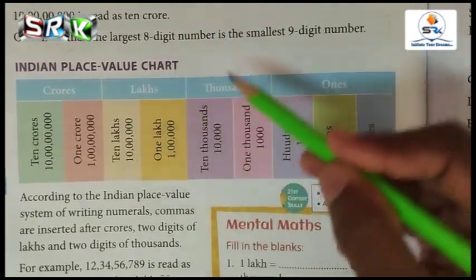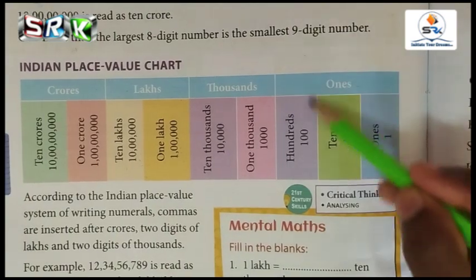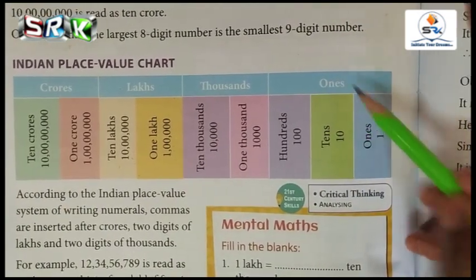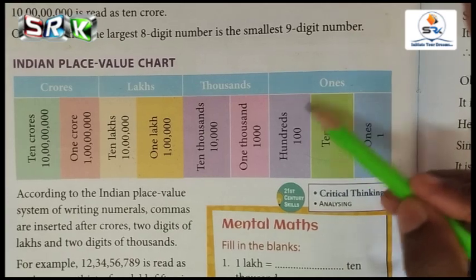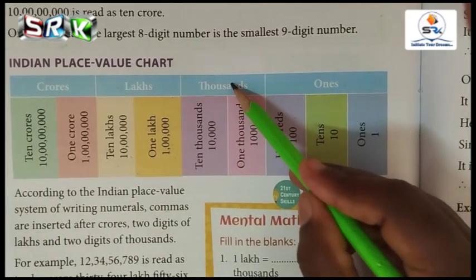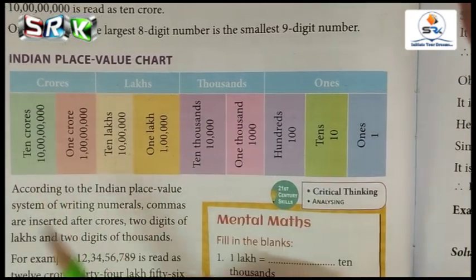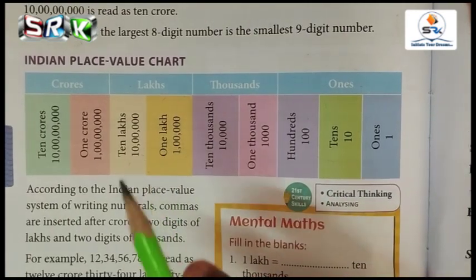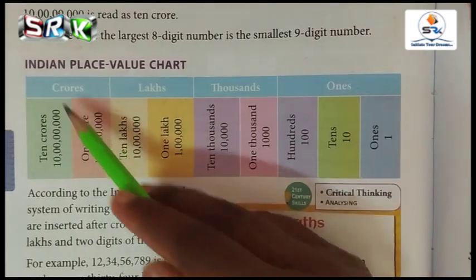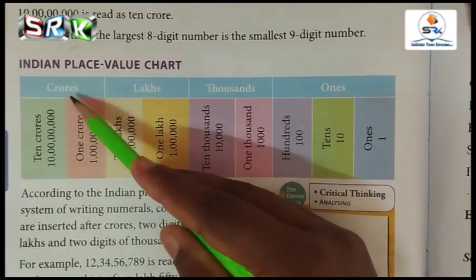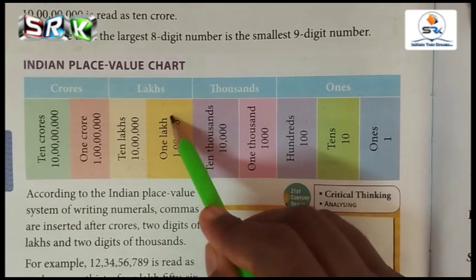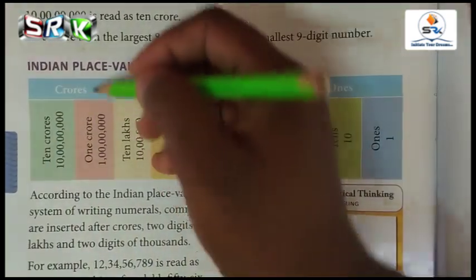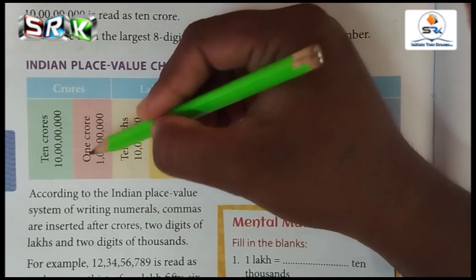This is the lakh period. This is the thousands period. This is the ones period — the ones period has only three place values. Next, after lakhs comes crores. Now this section you are going to see the crores.